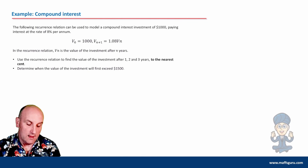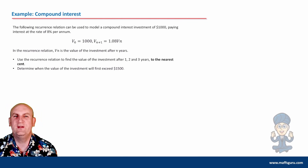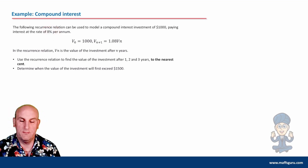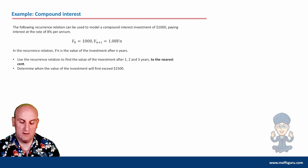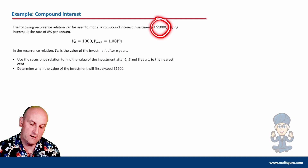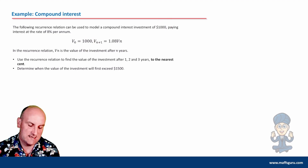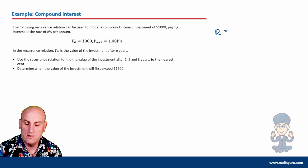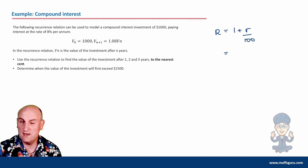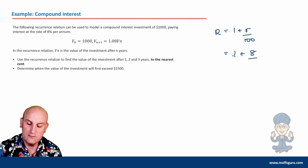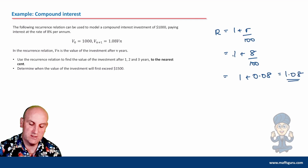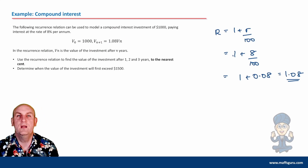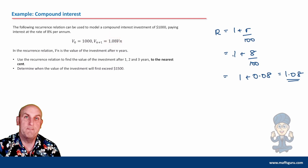Let's have an example of compound interest. The following recurrence relation can be used to model a compound interest investment of $1,000 paying interest at 8% per annum. V₀ is $1,000. The R value is 1.08, which comes from 1 plus 8 divided by 100, which is 1 plus 0.08 equals 1.08. In the recurrence relation, V(N) is the value of the investment after N years. Use the recurrence relation to find the value of the investment after one, two, and three years to the nearest cent.